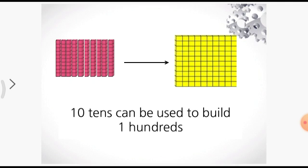Now children, come to textbook page number twenty. Here the topic is given: counting tens, counting hundreds. Here ten tens are there and one hundreds block is there. Come to the next one — hundred blocks can also be said as ten strips.